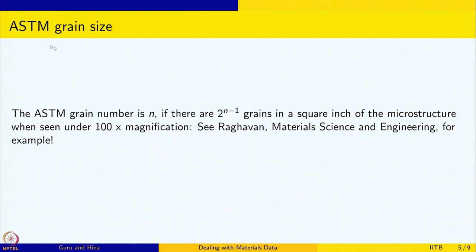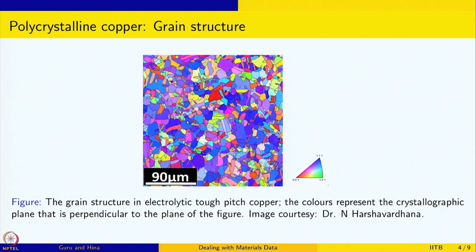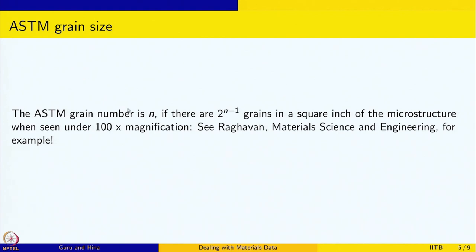There is a concept called ASTM grain size — a number indicating the grain size in a material. It is defined as follows: you take the microstructure at 100x magnification, take a 1 square inch area, count the number of grains, and the ASTM grain number is n if there are 2 to the power n minus 1 grains in that square inch. This is described in detail in Raghavan's book on Material Science and Engineering.